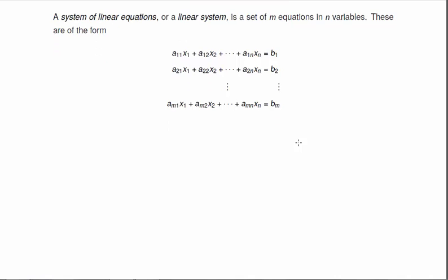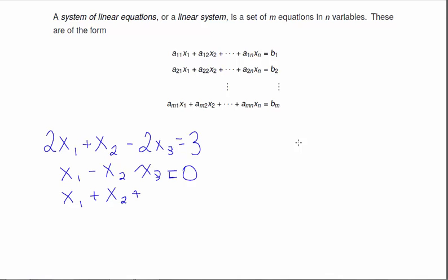So an example: 2x₁ + x₂ - 2x₃ = 3, x₁ - x₂ - x₃ = 0, x₁ + x₂ + 3x₃ = 12. So this is going to be a linear system because it's an entire group that we're looking at all at once.